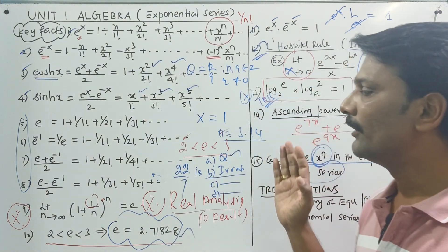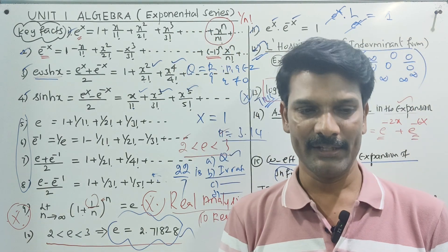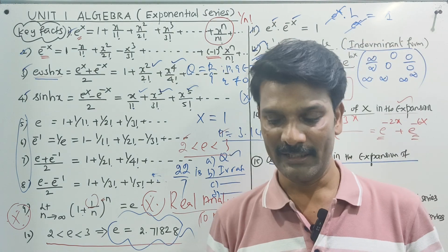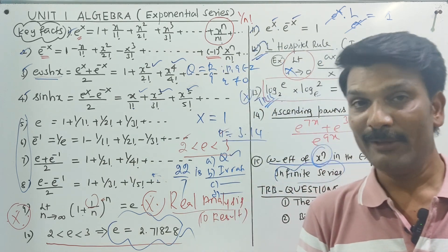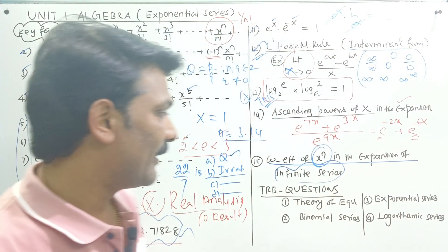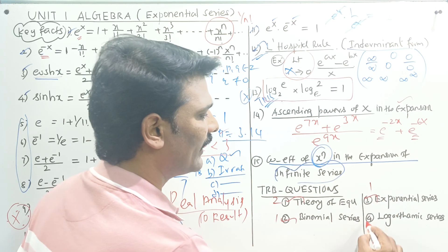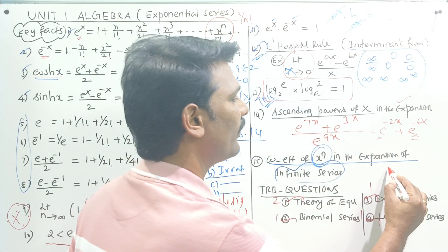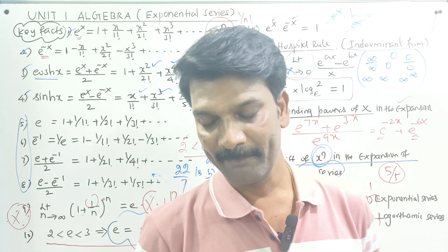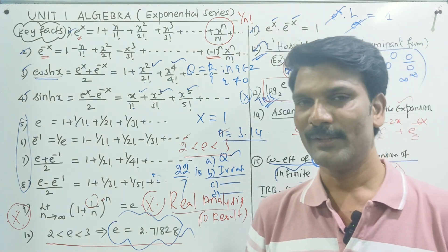Next are the 14 to 15 key points. In the expansion series, we will be able to find the material. Let's talk about the theory of equations, the binomial series, the exponential series, and the logarithmic series. In this video, you will find the first test. Thank you.